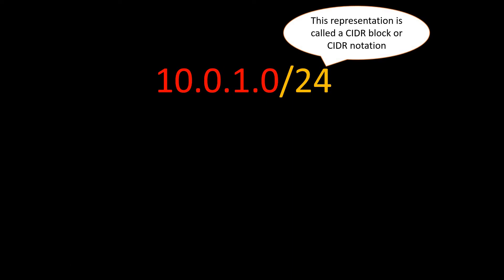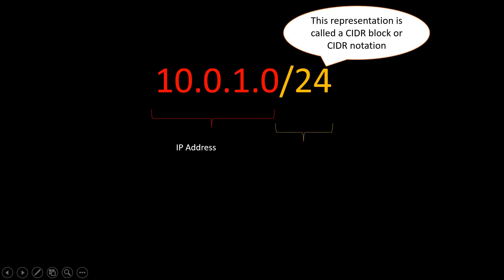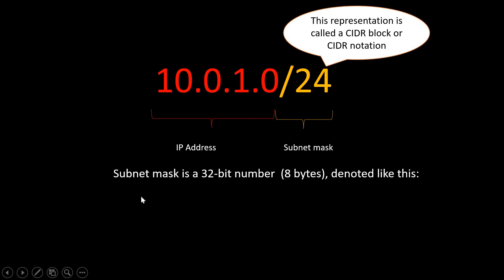When we assign this CIDR block to a network — for example in AWS we assign this CIDR block to a VPC and subnet — when we create a VPC we specify the CIDR block, or when we create a subnet we specify the CIDR block in this form. The CIDR block is divided into two parts: the first part is called the IP address part, and the second part is called the subnet mask.